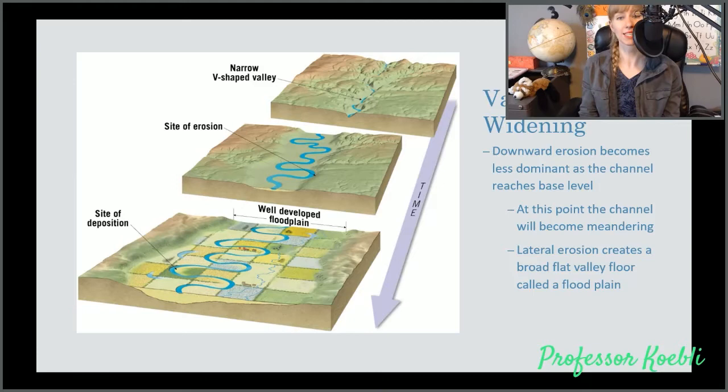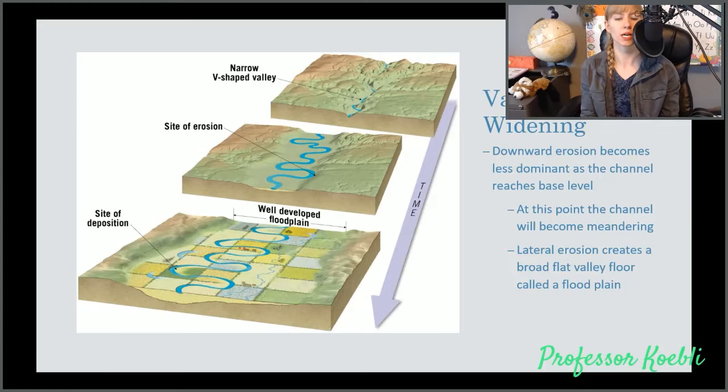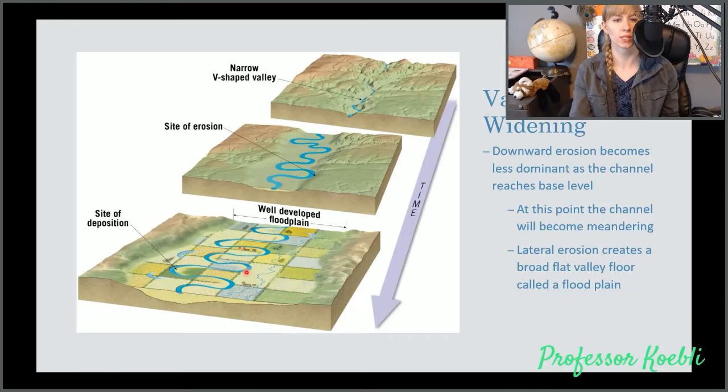With valley widening, downward erosion becomes less dominant as the channel reaches its base level. At this point, the channel will become a meandering stream and lateral erosion creates broad, flat valley floors called a floodplain. A lot of times you'll have on one side of the meandering stream erosion and on the opposite side deposition.